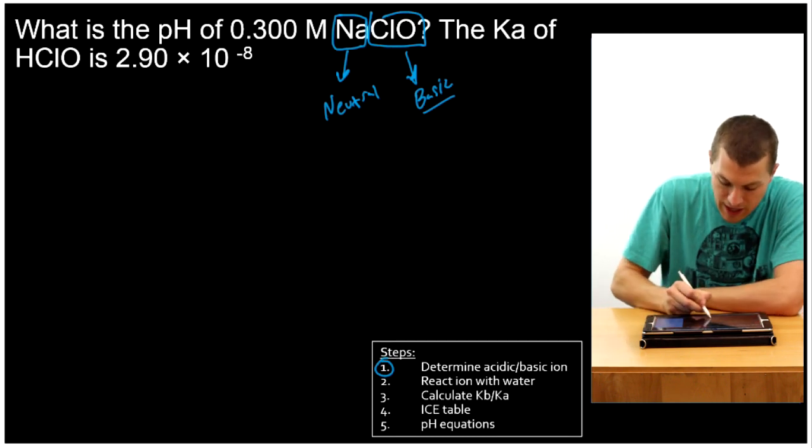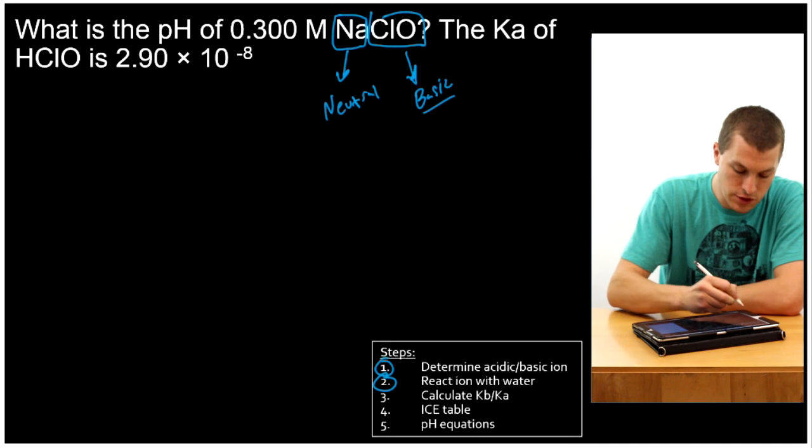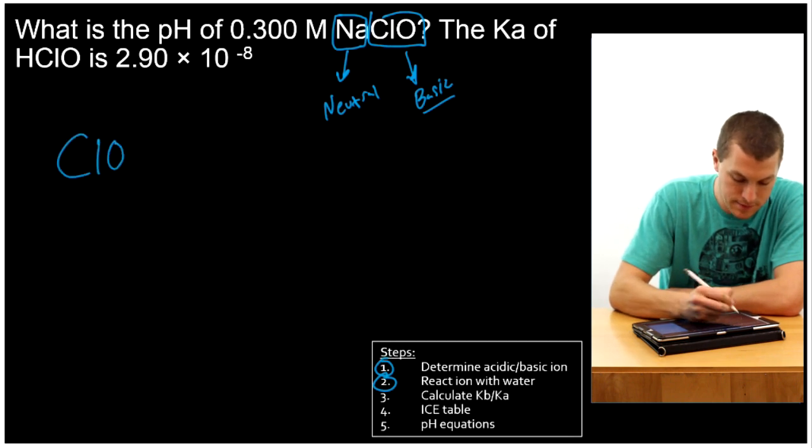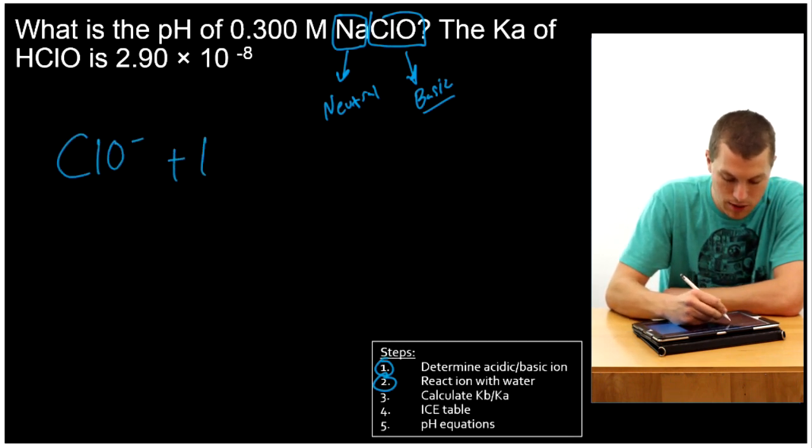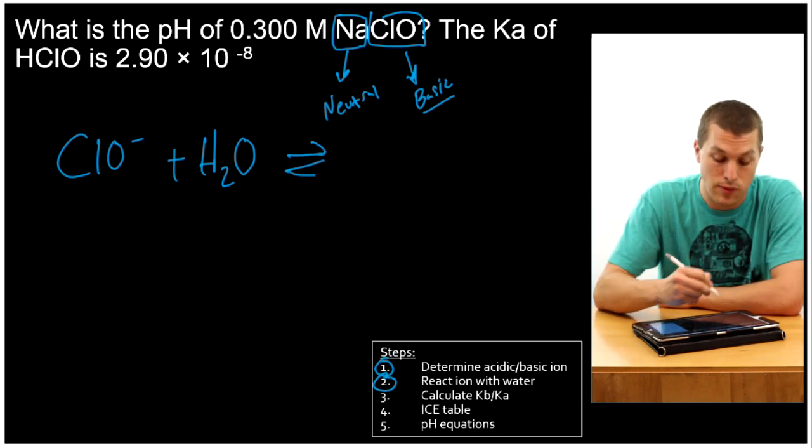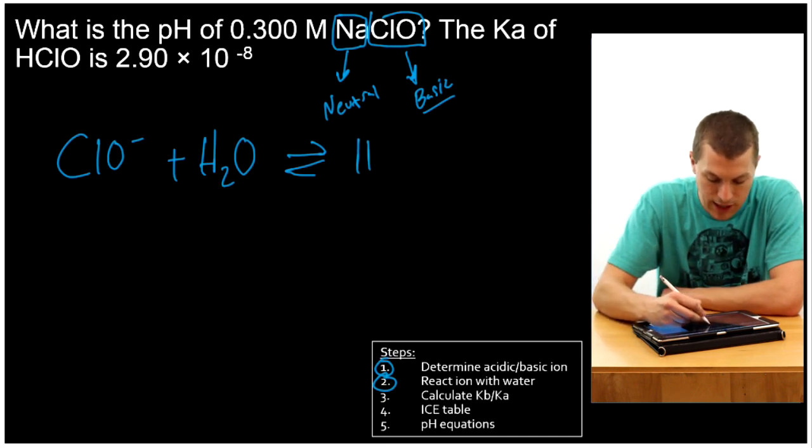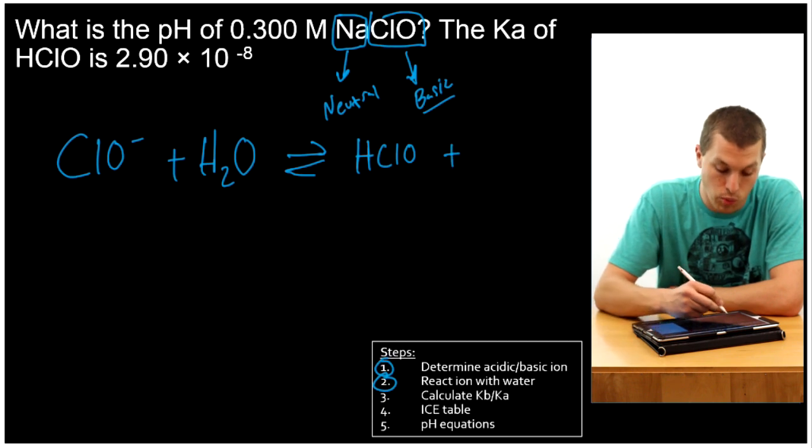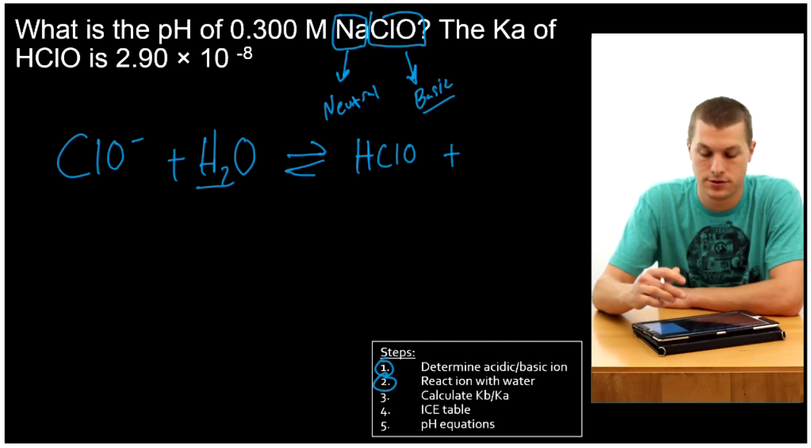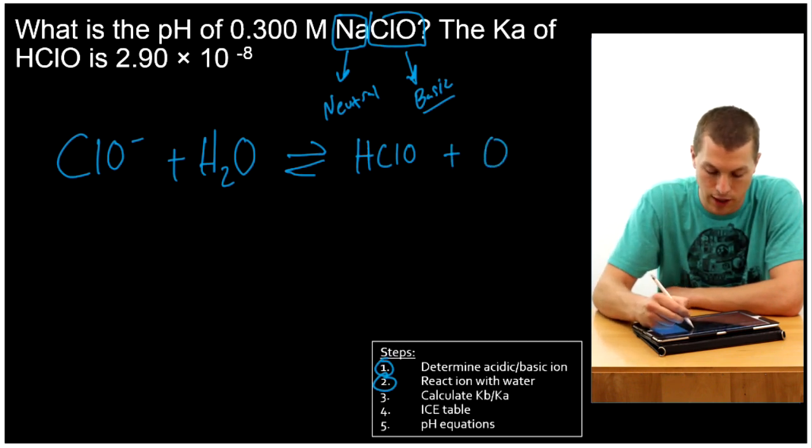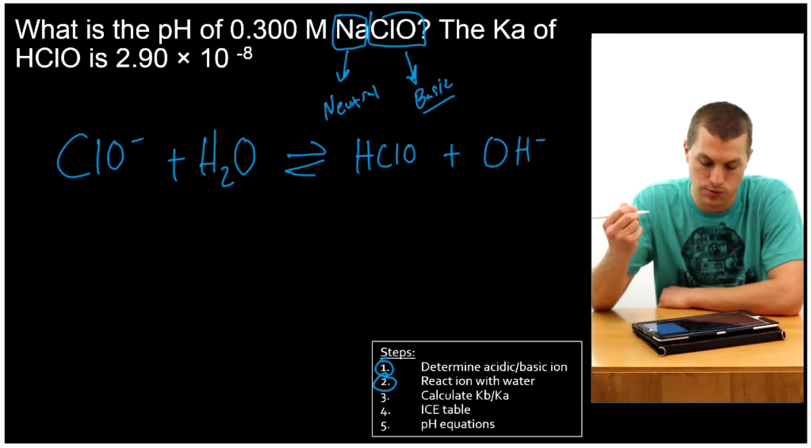So we know that ClO- is what's going to act like a base. So step two is react that ion with water. We're going to take ClO- and react it with water. And since it is a base, it's going to grab a proton, grab a hydrogen from water. When it does that, we're going to get HClO. And then the water, which has now lost one of its hydrogens, is going to look like OH-. So that's the reaction with water.